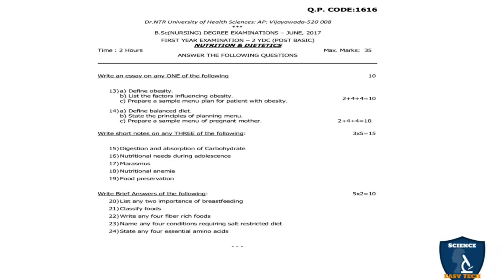Next is the June 2017 question paper — same format: 35 marks, 2 hours. Essay question: out of 2, answer 1. First question 1A: Define obesity — 2 marks. 1B: List the factors influencing obesity — 4 marks. 1C: Prepare a sample menu plan for a patient with obesity — 4 marks. 2 + 4 + 4 = 10 marks.